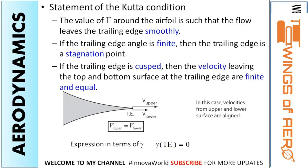The next condition: if the trailing edge is curved, then the velocities leaving the top and the bottom surface of the trailing edge are finite and equal. That means the velocity on the upper and lower surfaces will be the same, but that doesn't mean they are equal to zero. The Kutta condition states that the vorticity at the trailing edge is zero.